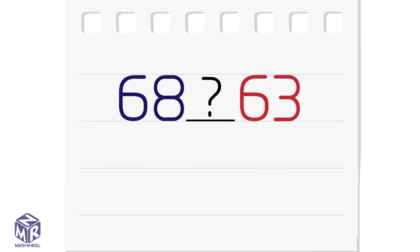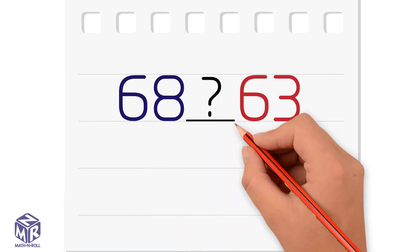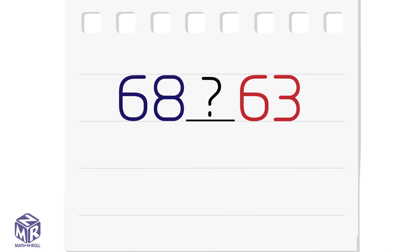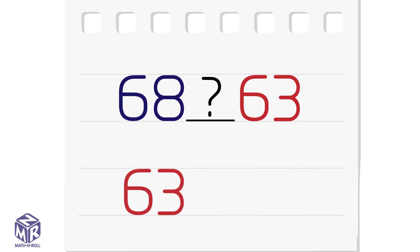Let's try another example. Which is less, 68 or 63? 68 has six tens and eight ones. 63 has six tens and three ones. If the tens are the same, we compare the ones. Three ones is less than eight ones, so 63 is less than 68.